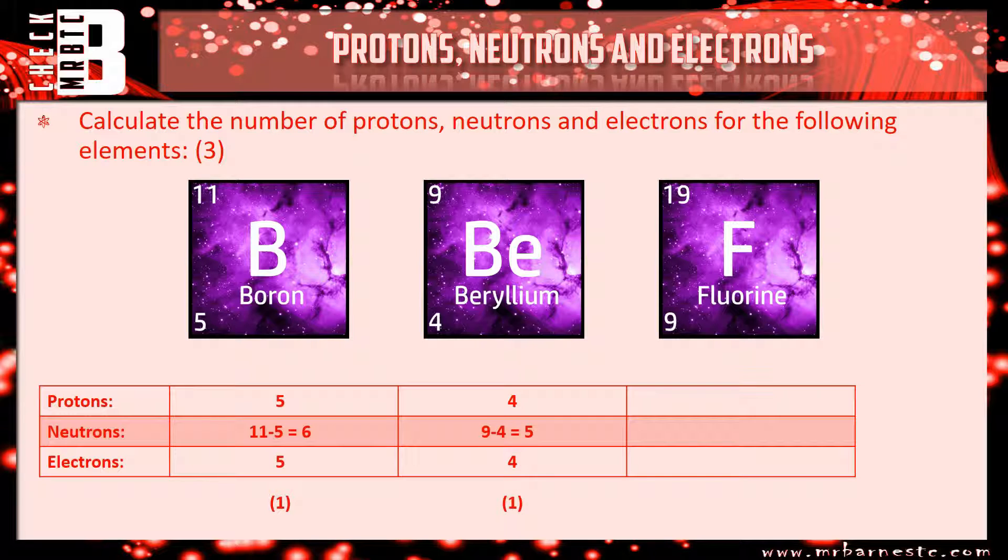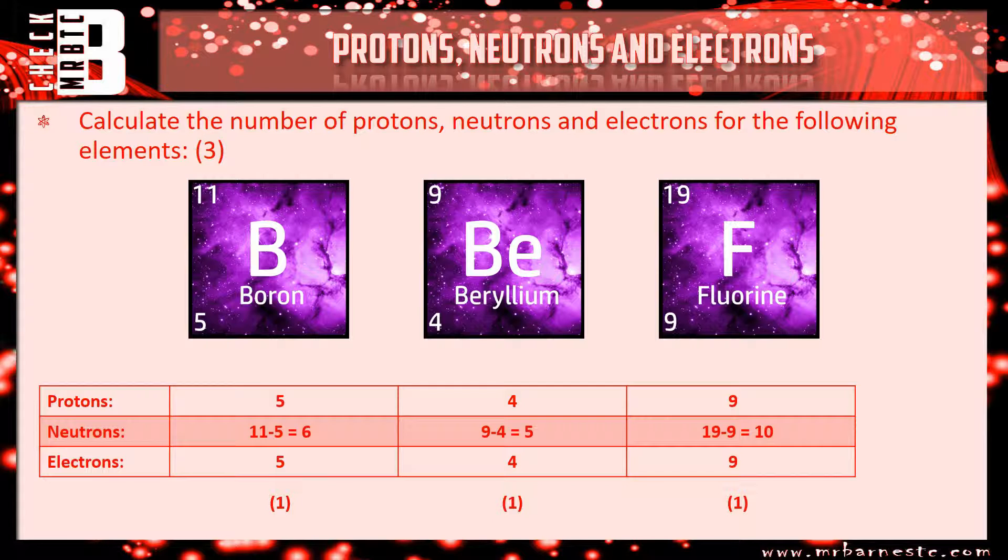And then fluorine, 19 and 9. 9 is a small number, that's the protons and electrons. Take them away from each other, it gives you 10 neutrons. So that is how you get all three marks here. Hopefully that makes sense and hopefully it's all come together nicely for you.